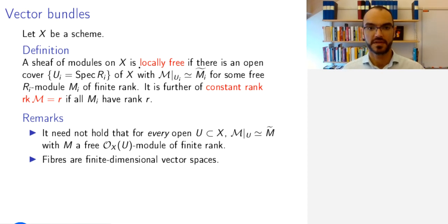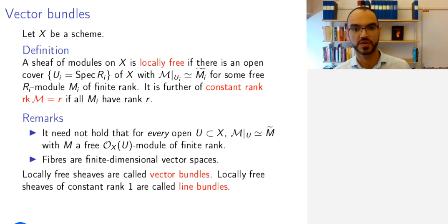Fibers of such locally free modules are finite dimensional vector spaces. This is because the fibers are the localizations of the modules at maximal ideals. So remember the fibers are the pullbacks that correspond to the inclusion of closed points into X. And so for that reason, locally free sheaves are called vector bundles because at each point you have a vector space of finite dimension. And if this finite dimension happens to be constantly one, then you call this a line bundle.